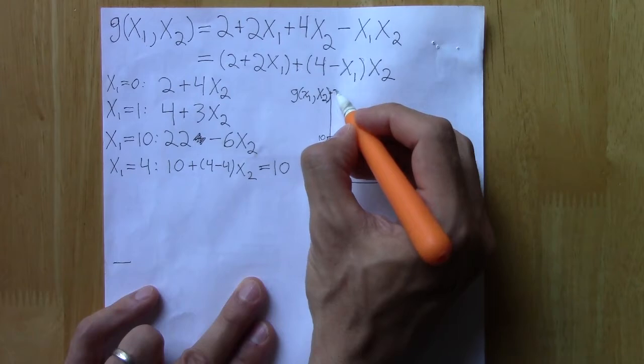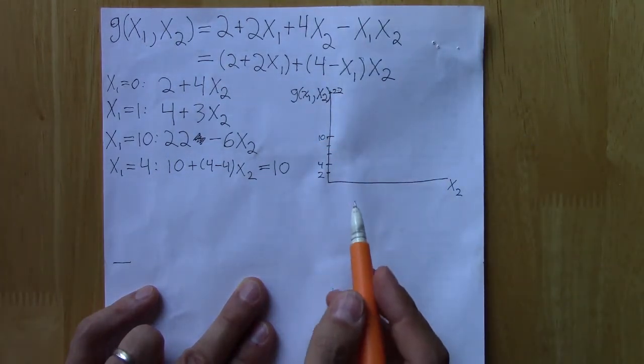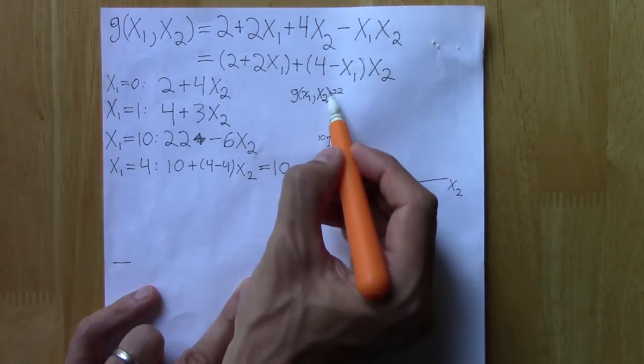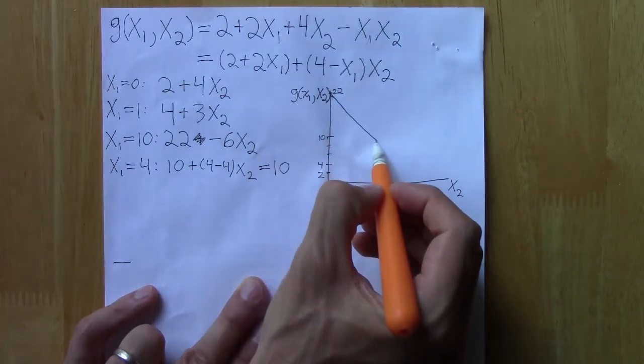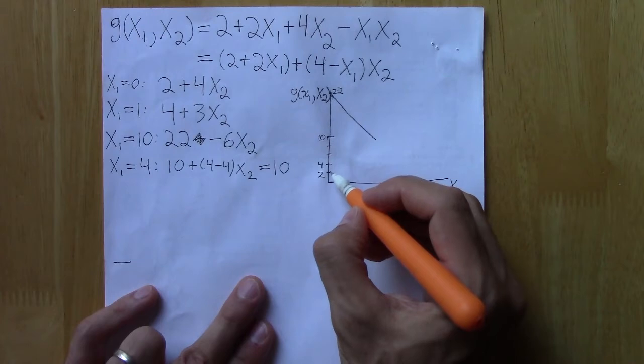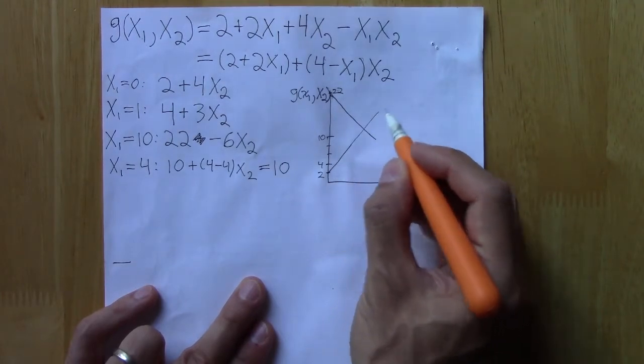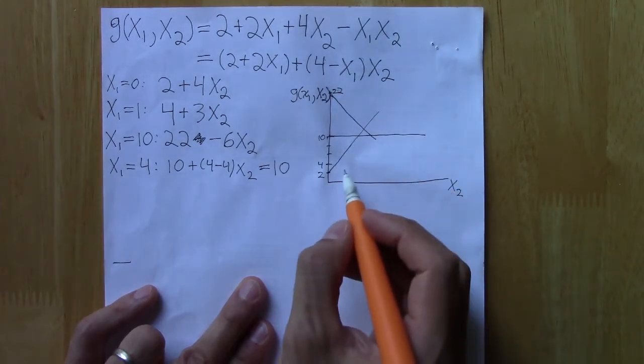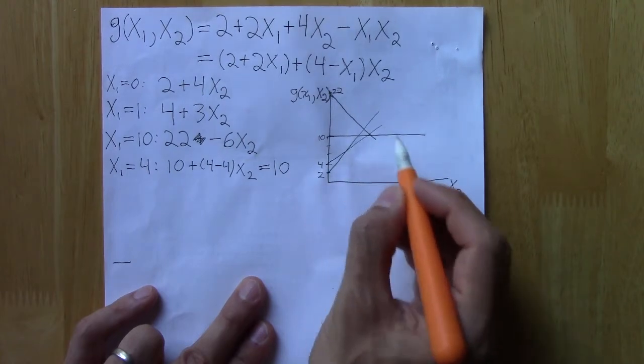And so the 22 has this very negative slope with respect to x₂, whereas the x₁ equals zero line actually has a positive slope. And the 10 is just a constant. And the 4 is a little bit shallower.